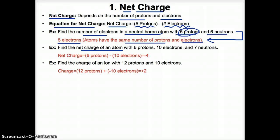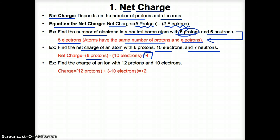Example two: find the net charge of an atom with six protons, ten electrons, and seven neutrons. We plug into net charge equals protons minus electrons: six protons minus ten electrons gives a net charge of minus four. Example three: find the net charge of an ion with 12 protons and ten electrons. Plugging in: 12 protons minus ten electrons gives a net charge of plus two for this ion.